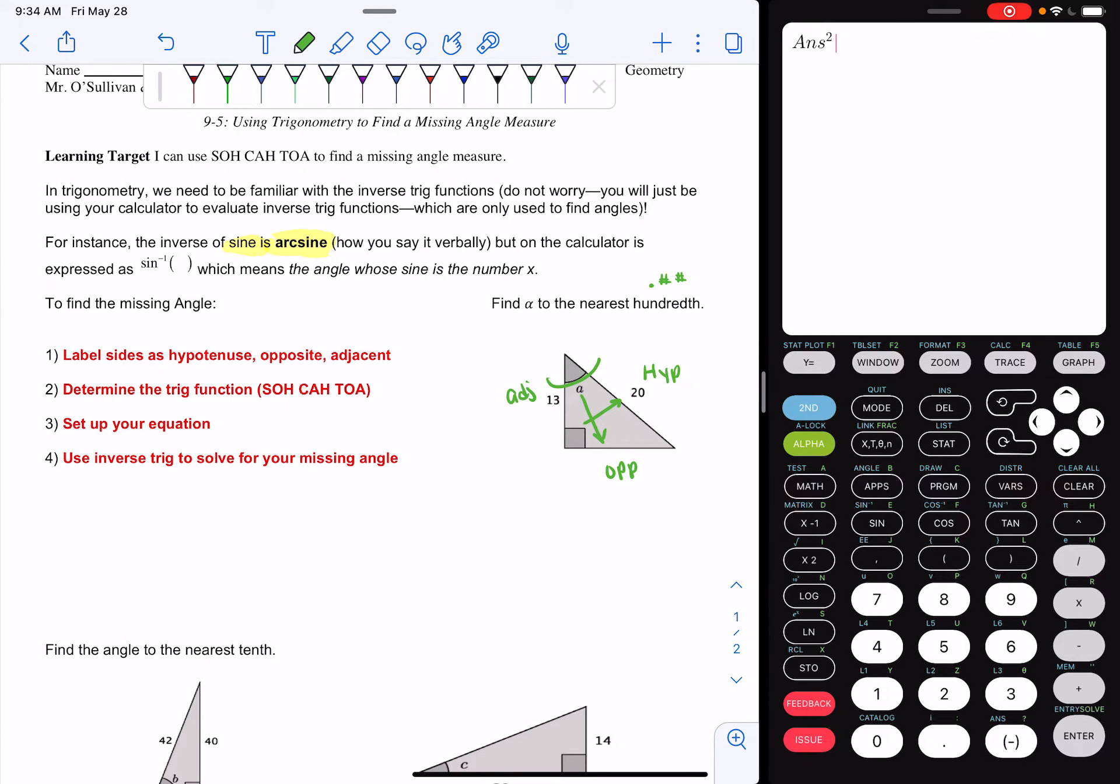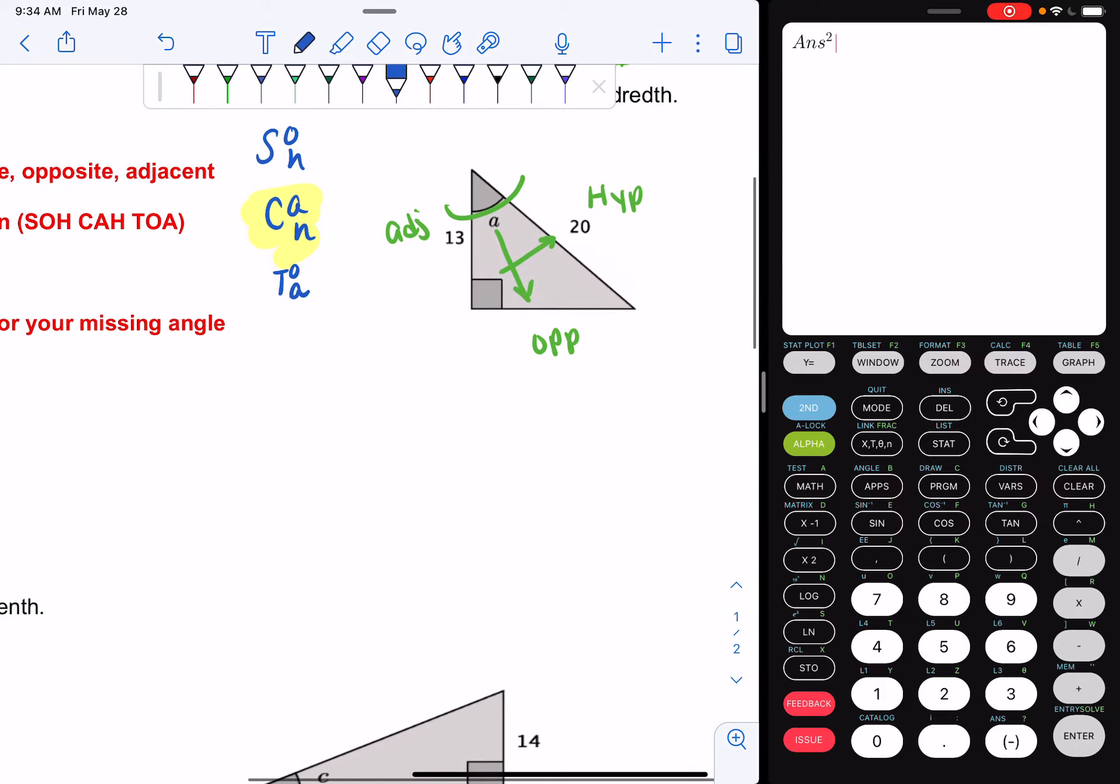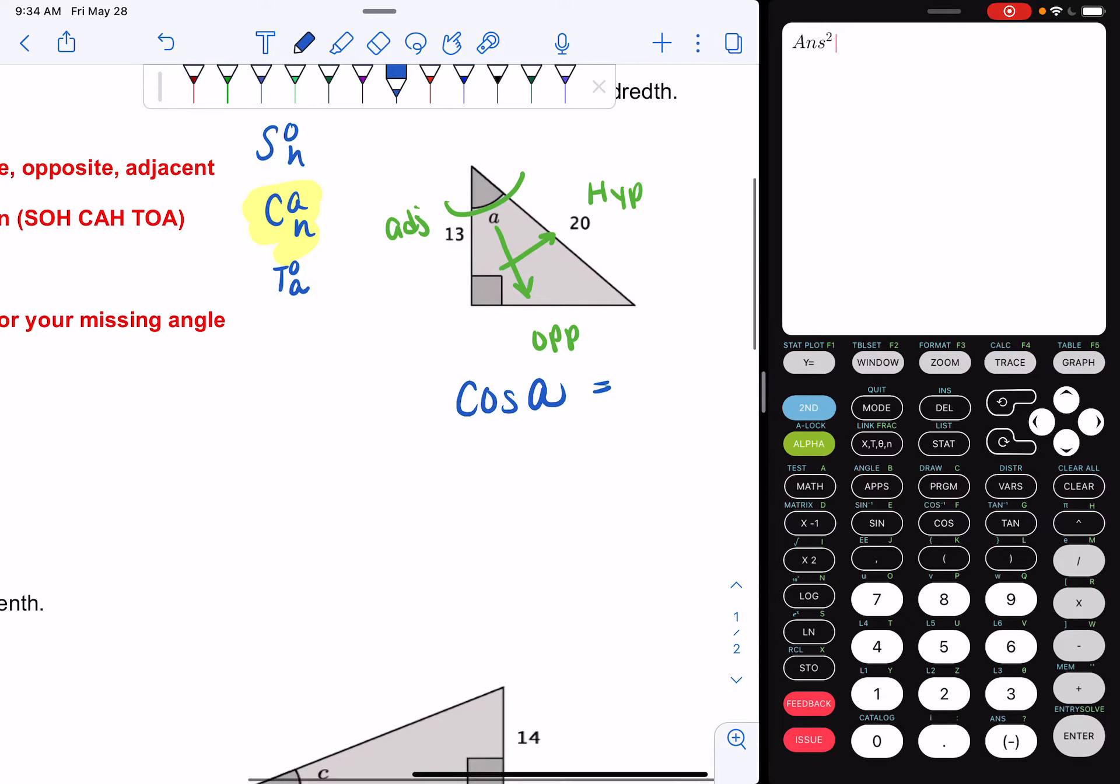Step two says determine your trig function, SOHCAHTOA. So when I write out SOHCAHTOA for this question, I can see that I'm dealing with my adjacent and my hypotenuse. So I'm dealing with cosine of theta. So I can write down cosine of alpha. If you want, you can just make the letter A equals adjacent over hypotenuse. If you look at this image, my adjacent is 13. My hypotenuse is 20.